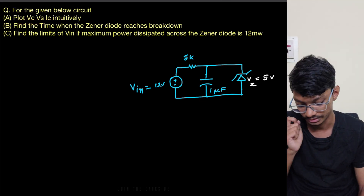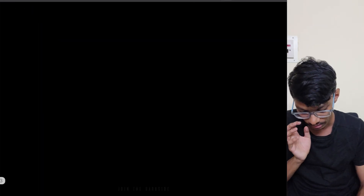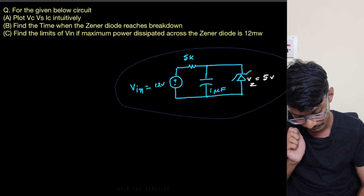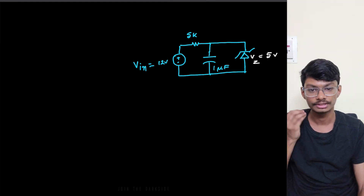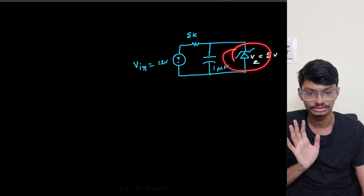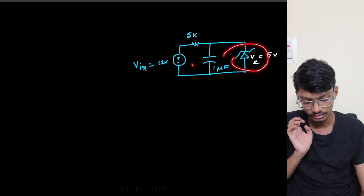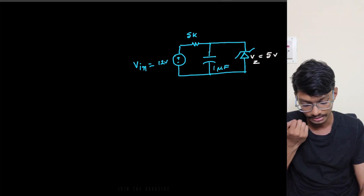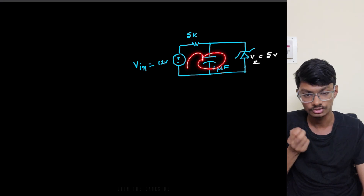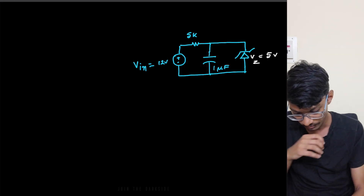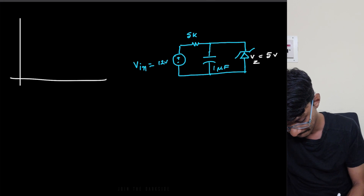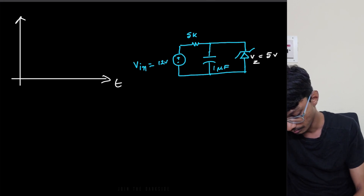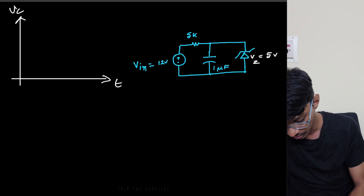Let's solve the first part: plot VC versus IC intuitively. First, let me think about what happens if the Zener diode wasn't there. What would the capacitor voltage be? Initially it would be zero, then it would charge to 12 volts. Let me plot that case — with respect to time, plotting only the capacitor voltage.